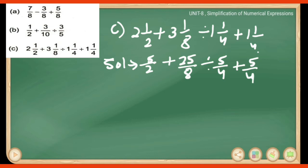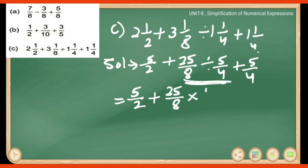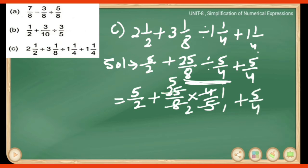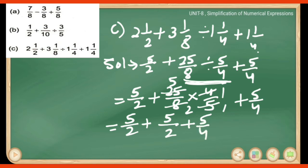According to the DMAS rule, division comes first. So we do 25/8 divided by 5/4, which becomes 25/8 multiplied by 4/5. Simplifying: 4 cancels with 8 to give 2, and 5 cancels with 25 to give 5. So 25/8 × 4/5 = 5/2. The expression now becomes 5/2 plus 5/2.